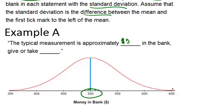Give or take blank. So here we're going to fill in the standard deviation to give people a sense for how spread out this data is. If the typical measurement is $500, but everyone has about $500, that's different than the typical measurement being $500 but the data being really spread out all between $0 and $1,000 or something like that.